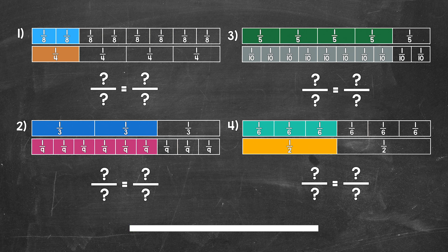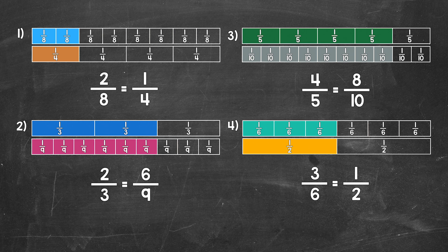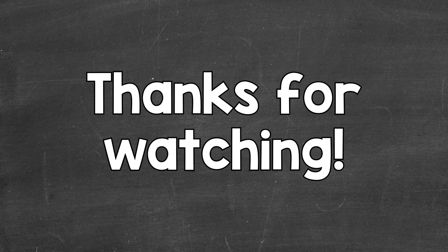Okay, so that's two minutes. Let's go over the answers. For number one, our equivalent fractions are 2 eighths and 1 fourth. For number two, our equivalent fractions are 2 thirds and 6 ninths. Moving on to number three, our equivalent fractions are 4 fifths and 8 tenths. And lastly, number four, our equivalent fractions are 3 sixths and 1 half. There's how to find equivalent fractions using fraction strips. I hope that helped. Thanks so much for watching. Until next time, peace.